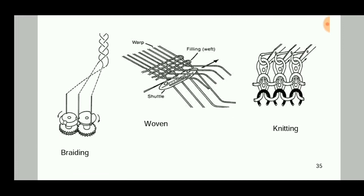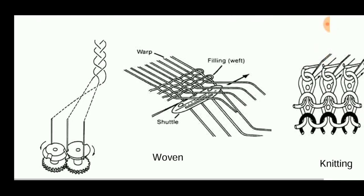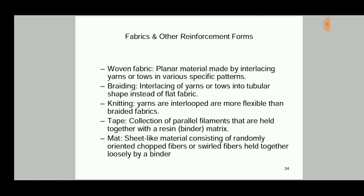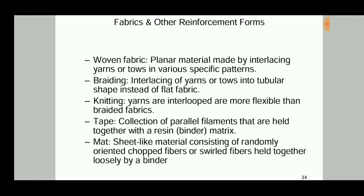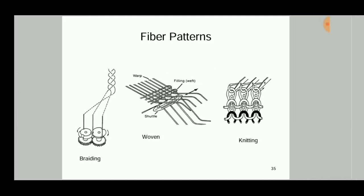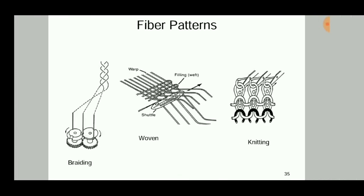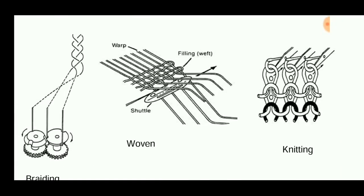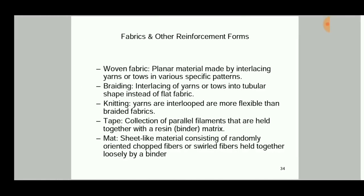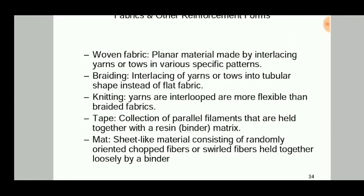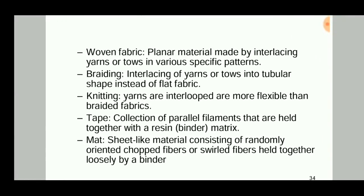In the braiding operation, the threads are woven into a tubular shape. Knitting is simply the process of making cloth. Tape is a collection of parallel filaments held together with resin.